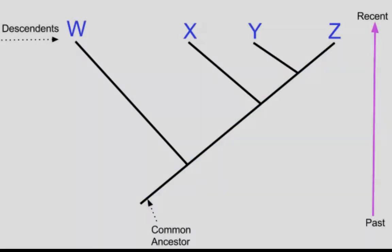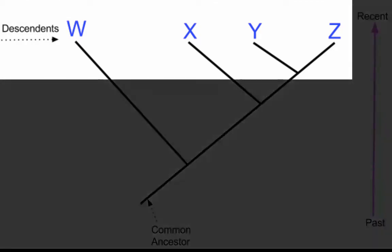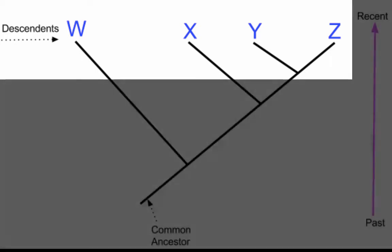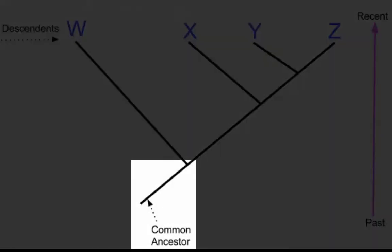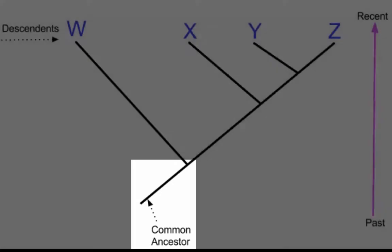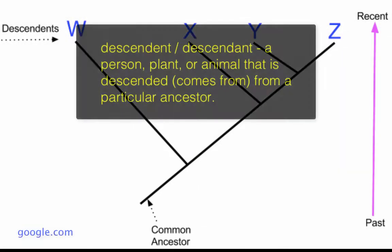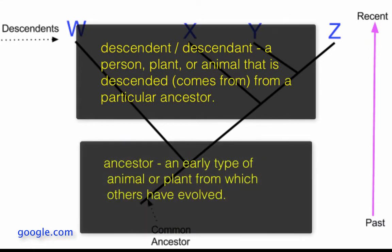The cladogram, or evolutionary tree, at the very top, at the end of the branches, you see the descendants. At the base of the tree you see the common ancestor. Descendants evolve from common ancestors; common ancestors give rise to descendants.